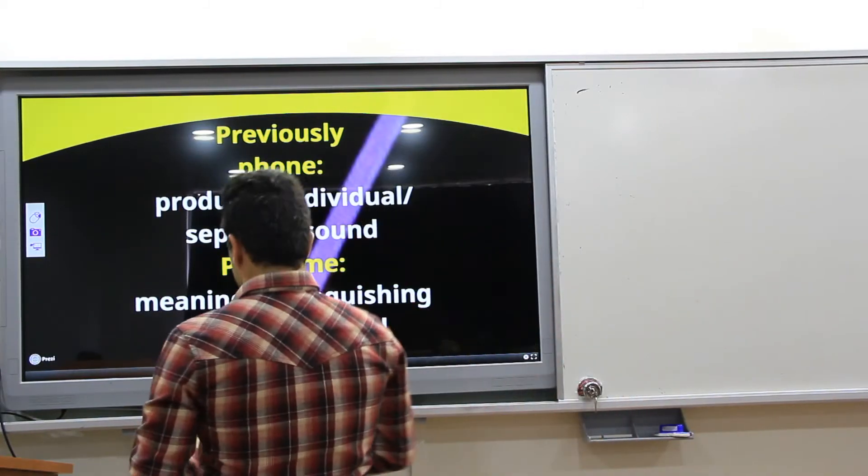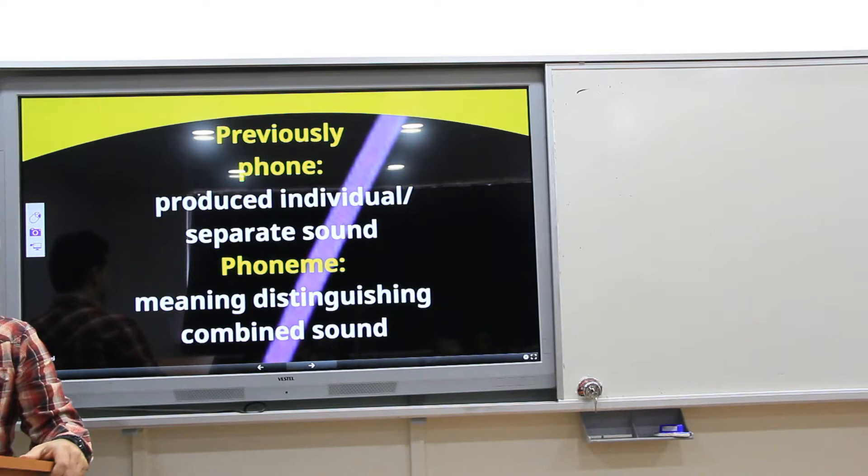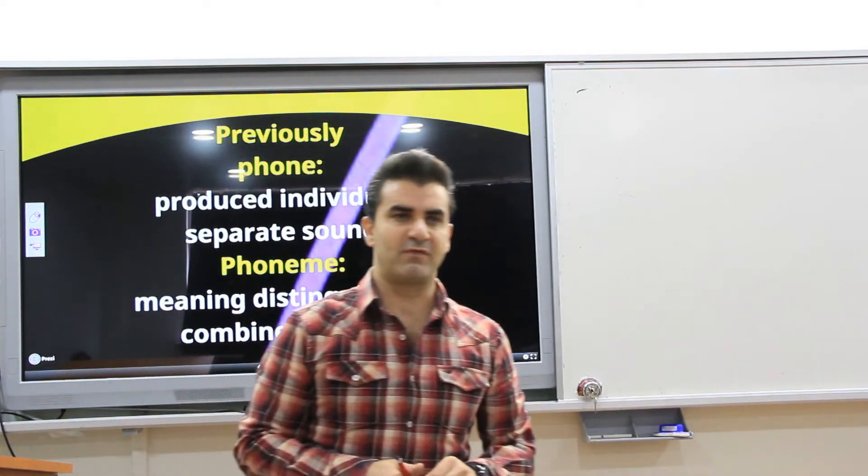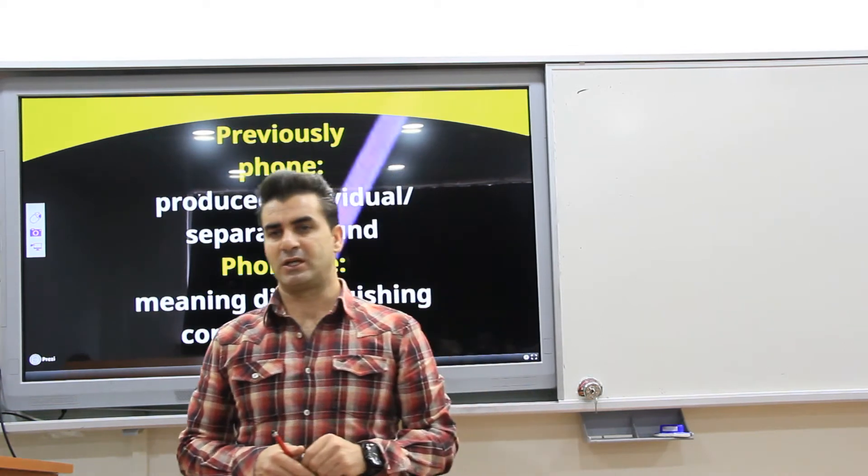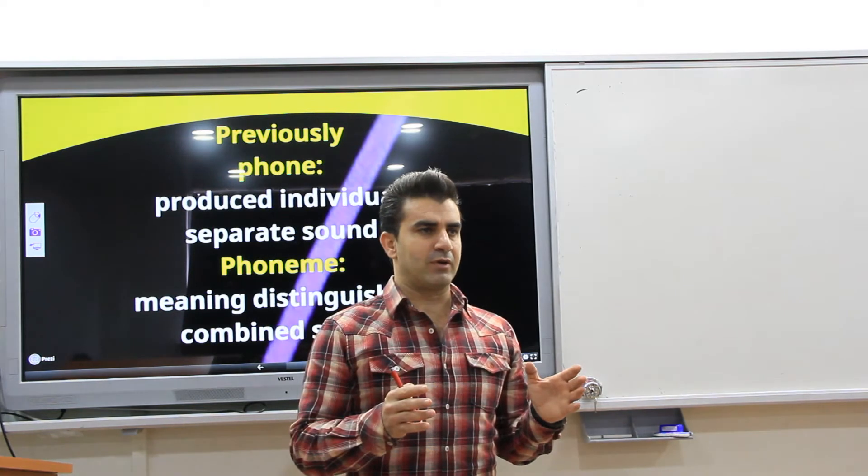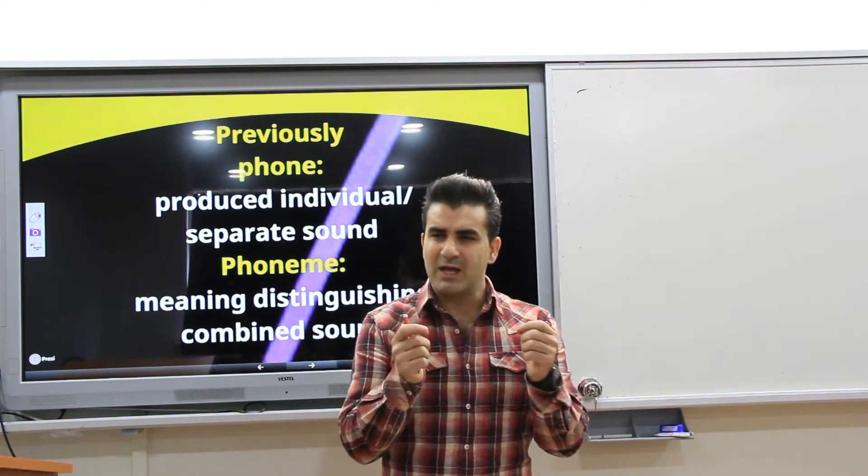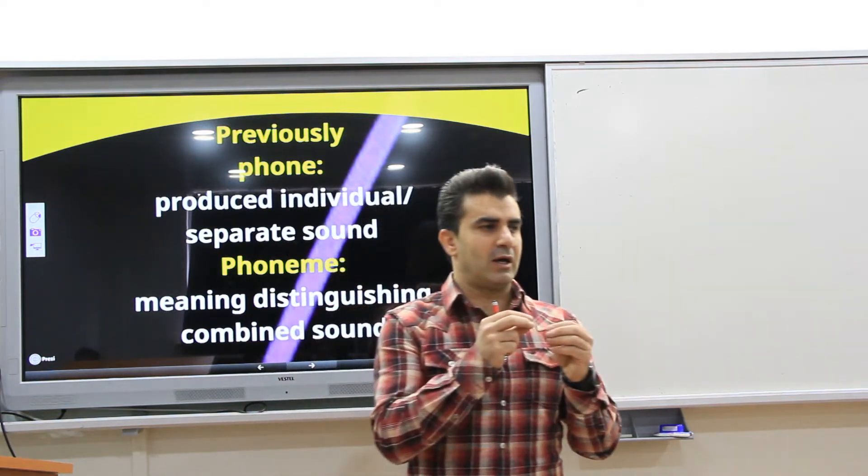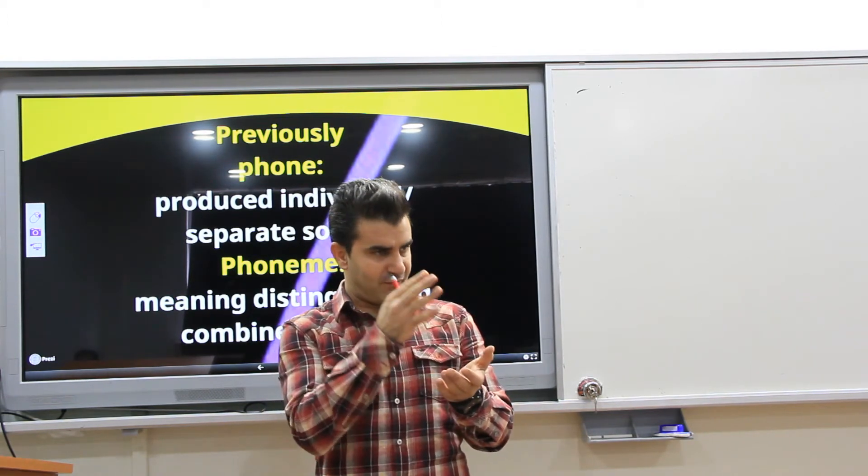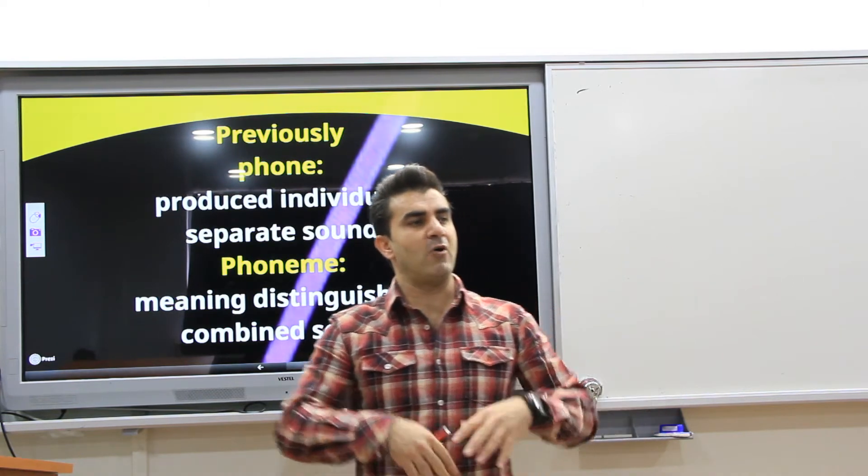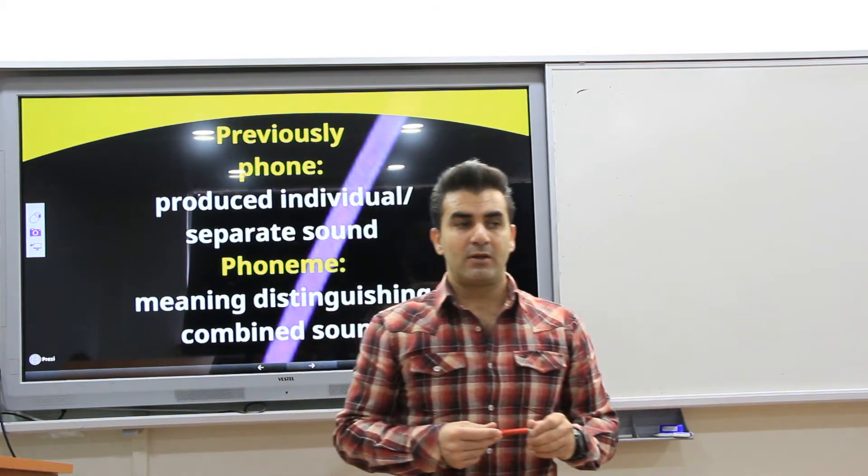Okay guys, if you remember, previously we talked about producing individual sounds, producing separate sounds at the beginning. We talked about phonetics and phonology, like we talked about how we produce t, bit, sip, g sounds. And then, after having enough information about how we produce sounds, we talked about how we combine those sounds and how each sound has a distinguished meaning within the combined sounds. We talked about phonemes, right? And then we talked about how we form words in languages. And today we are going to talk about the morphemes.